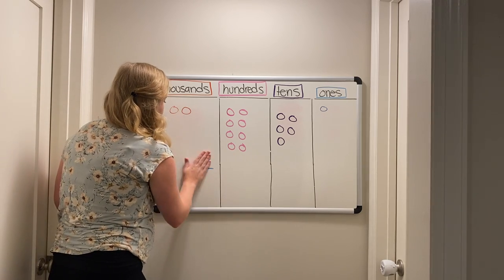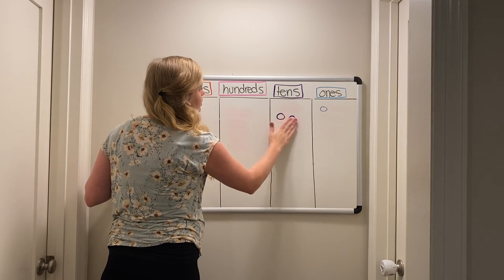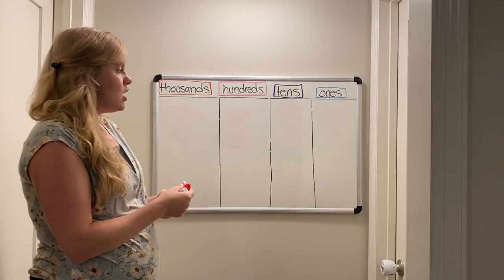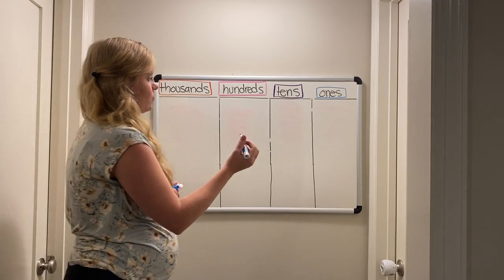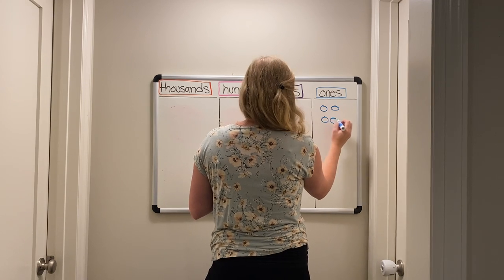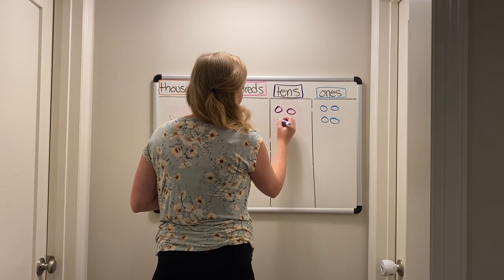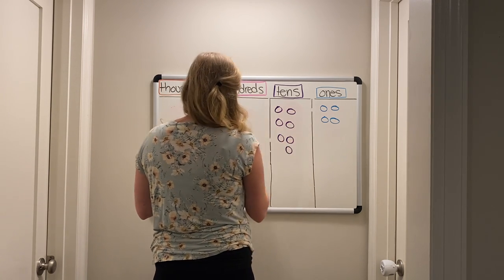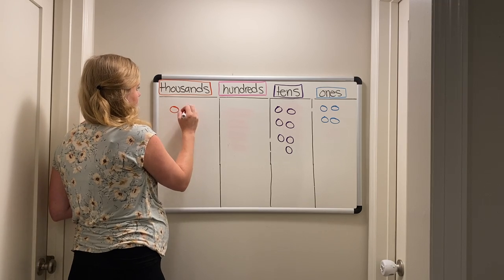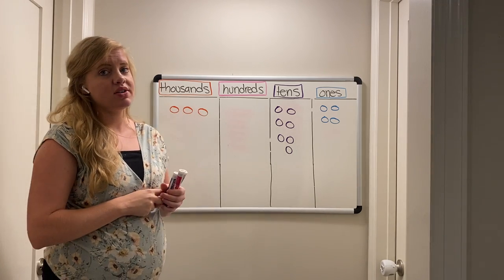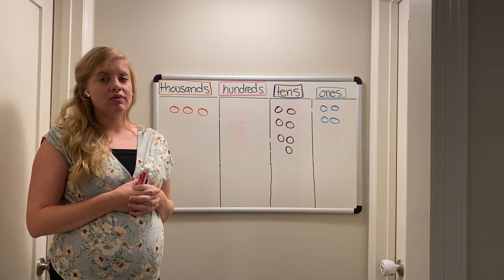I'm going to try to trick you on this one — I know third graders are really hard to trick, but I'm going to try anyway. Go ahead, pause your device and figure this out. What number did I just draw on my place value chart?